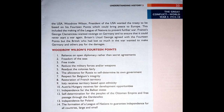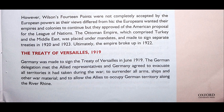However, Wilson's 14 Points were not completely accepted by the European powers as their views differed from his. The Europeans wanted their empires and colonies to continue but they approved of the American proposal for the League of Nations. The Ottoman Empire, which comprised Turkey and the Middle East, was placed under mandates and made to sign separate treaties in 1920 and 1923. Ultimately the empire broke up in 1922.